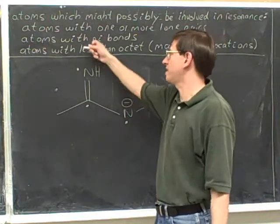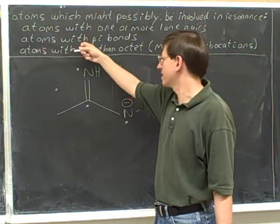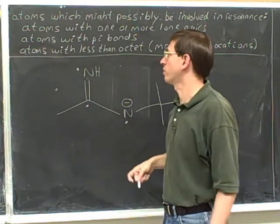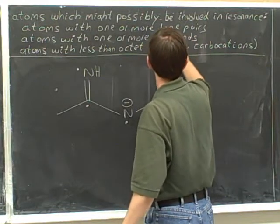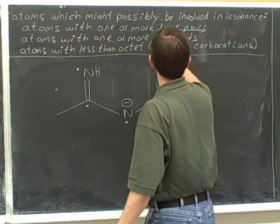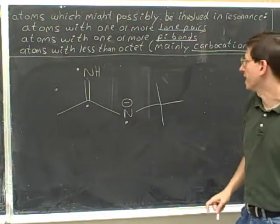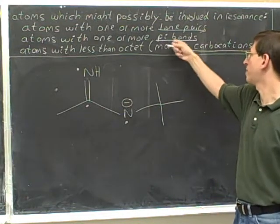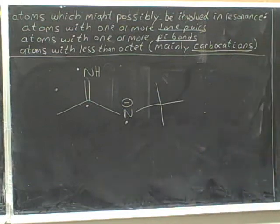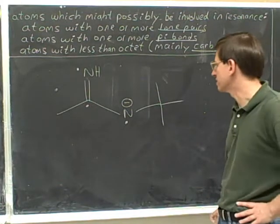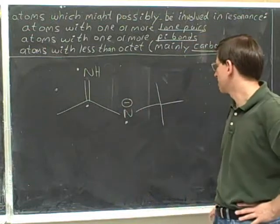Now that I think of it, I should have said that about pi bonds too — atoms with one or more pi bonds. So again: one or more lone pairs, one or more pi bonds, or a carbocation are the main things that can possibly participate in resonance. There are no other atoms here that can participate in resonance.